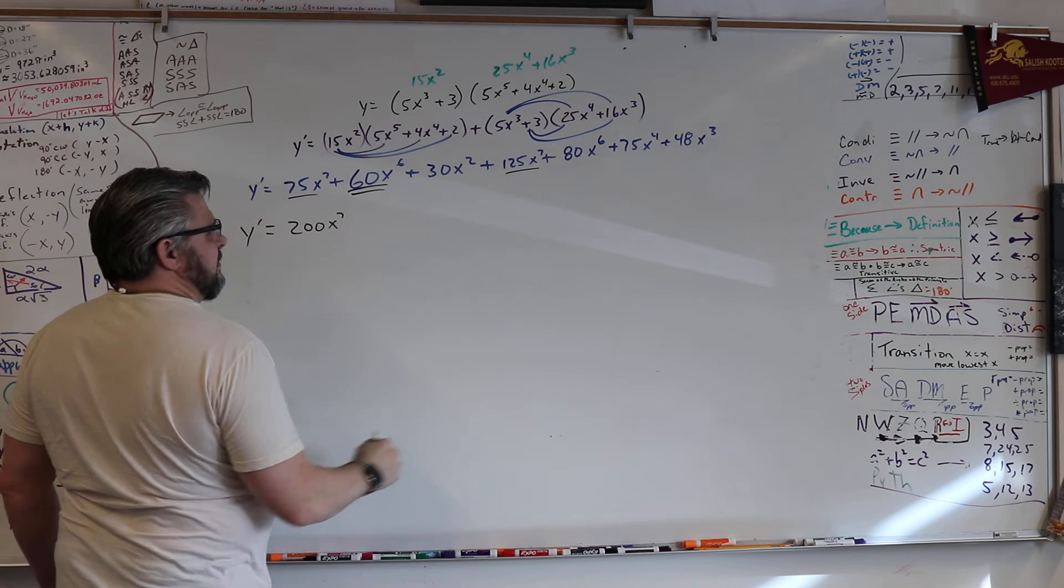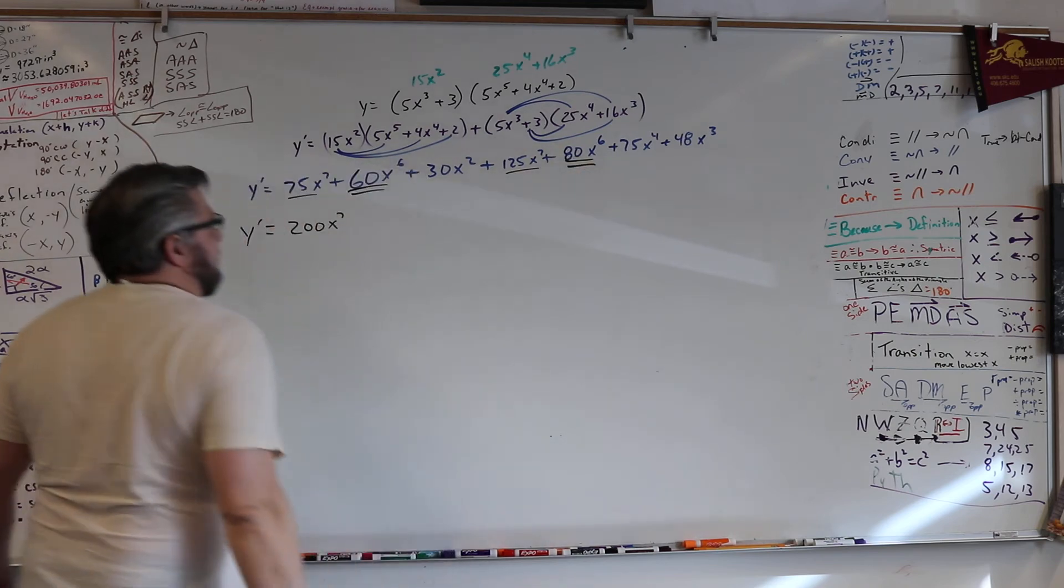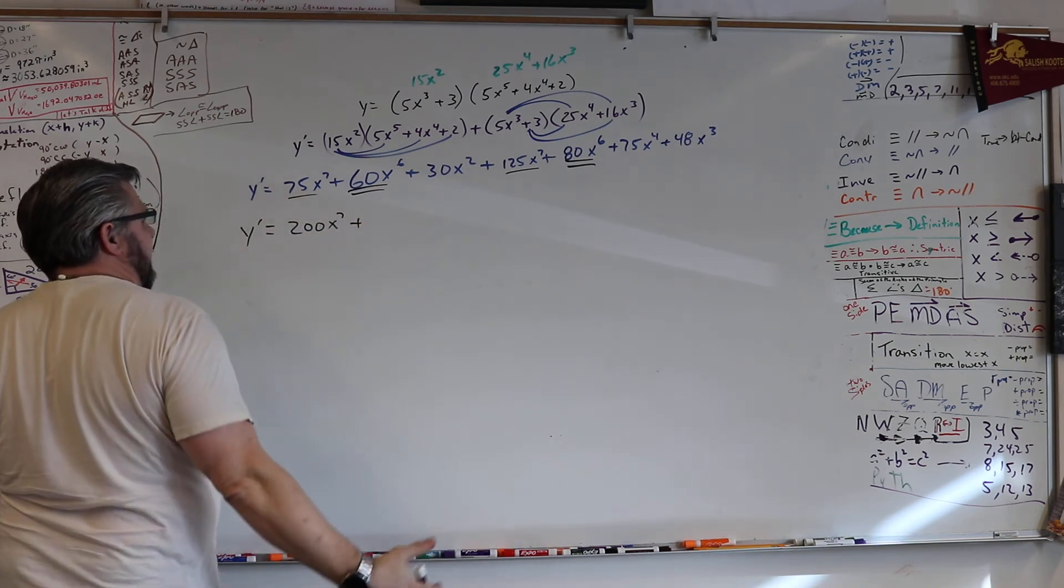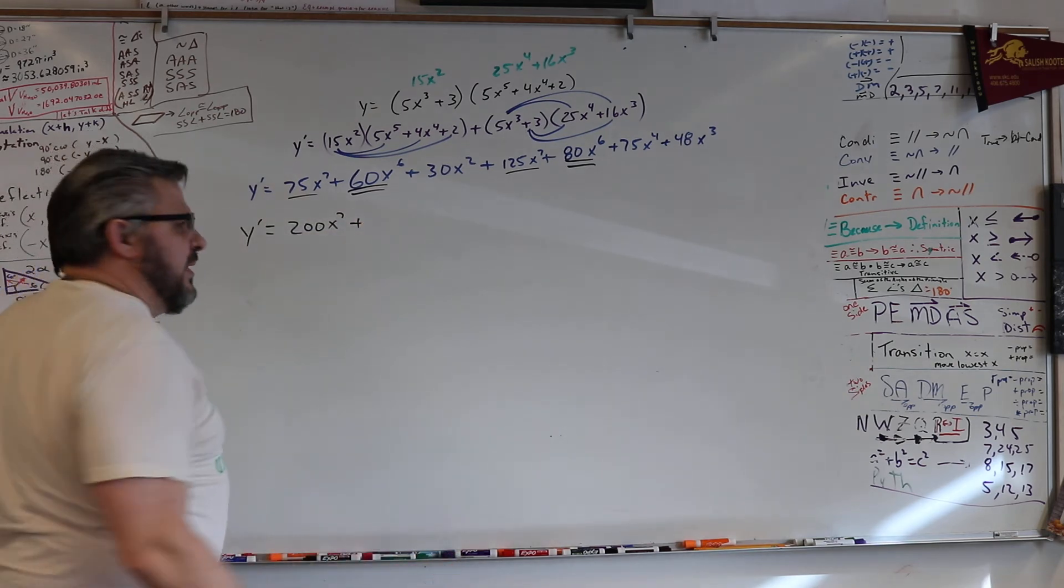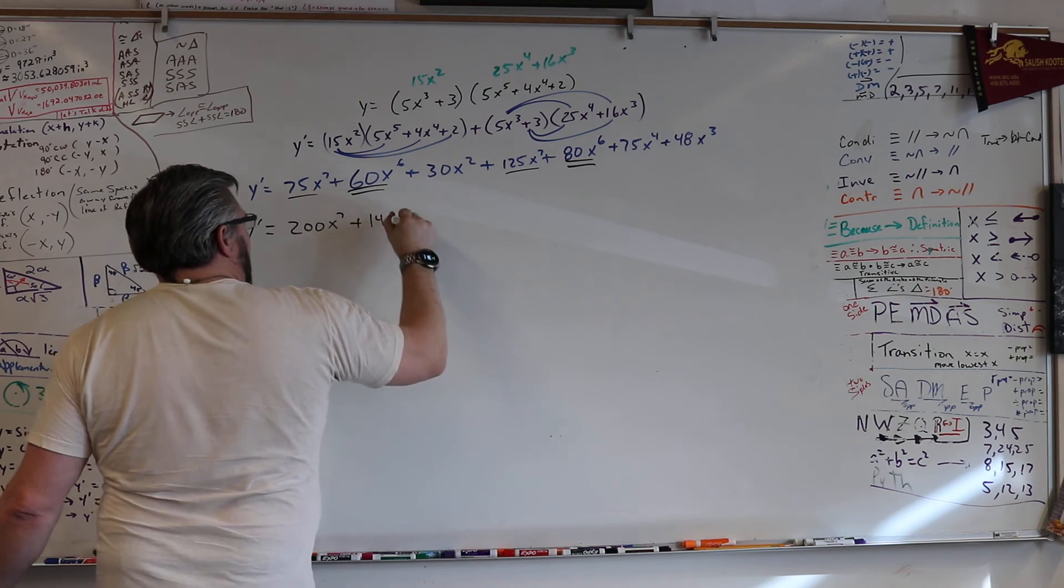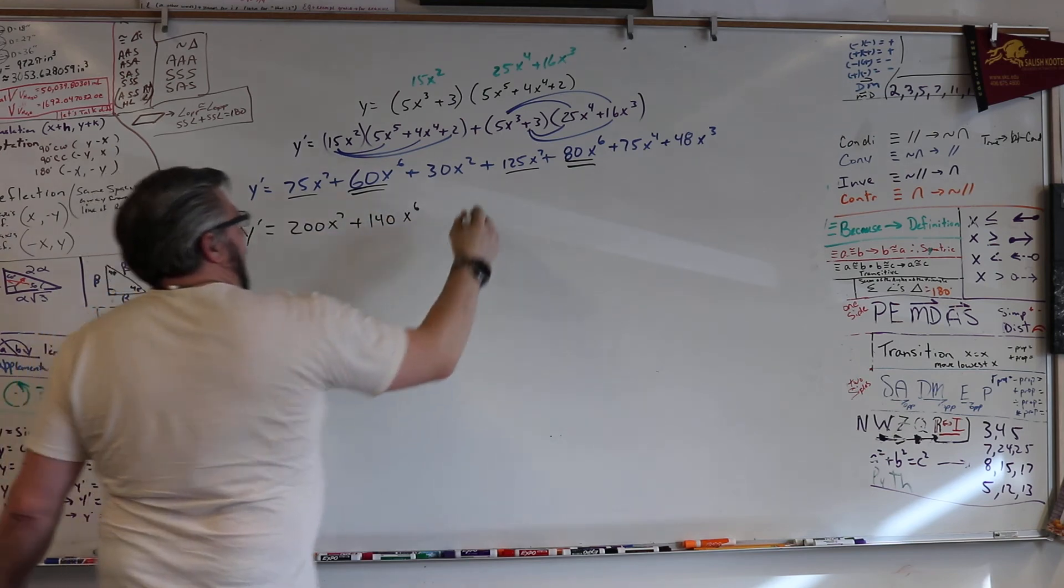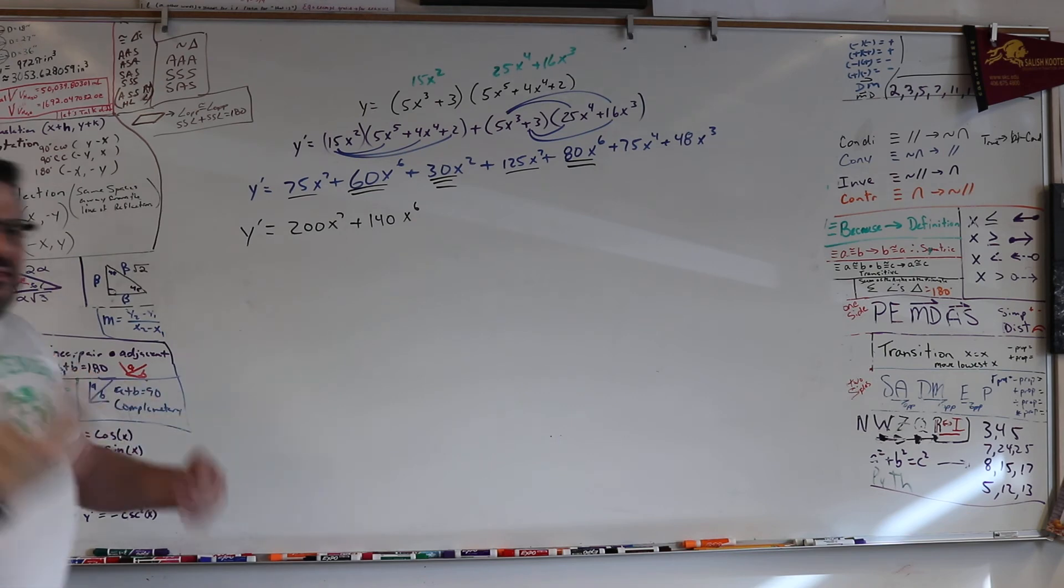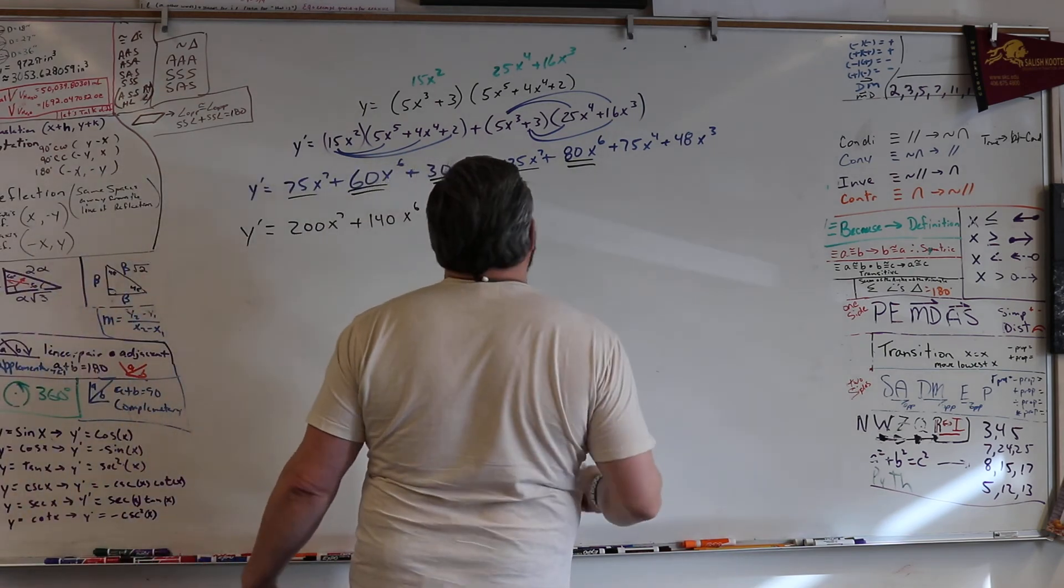Any sixes? Alright, so we got two sixes. That's 60 and 80. What do we got? 60 and 80 is 140 x to the sixth. Notice my pattern here. Every time I taught you guys this in Algebra 1, remember that? How many years ago?